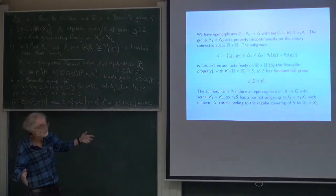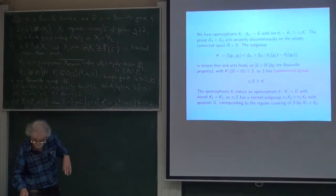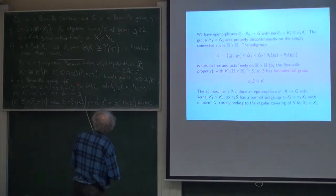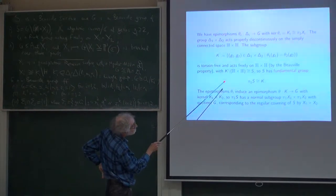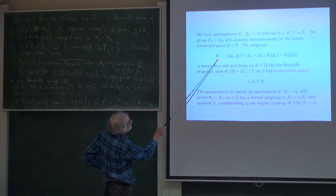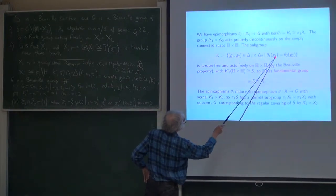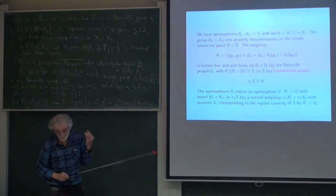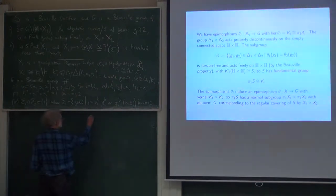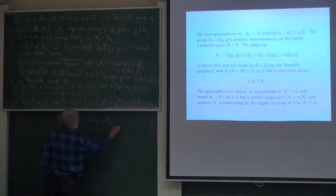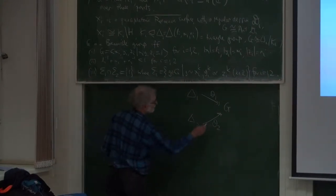If you take the product of the two triangle groups acting on the product of two copies of the hyperbolic plane, that's a simply connected space, because the hyperbolic plane is simply connected. You're quotienting out a group acting properly discontinuously, so there's no pathology. By the Beauville construction — because the finite group acts freely on the product — you have epimorphisms θ₁ from Δ₁ onto G and θ₂ from Δ₂ onto G.